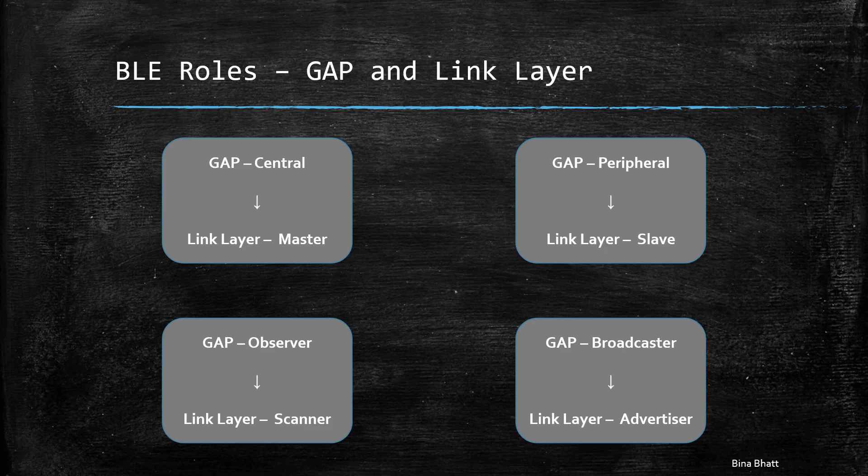Similarly, the slave is capable of sending across advertisements just like an advertiser, but it is also capable of forming active connections, and this is the reason why it is known as slave and not just an advertiser. So these are GAP roles and their corresponding Link layer roles.